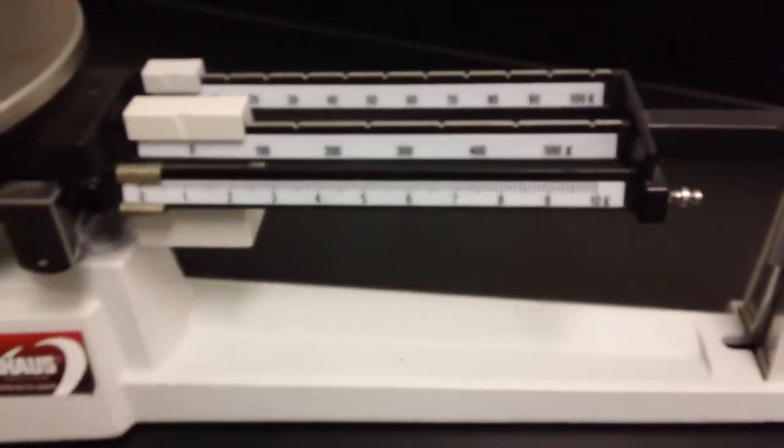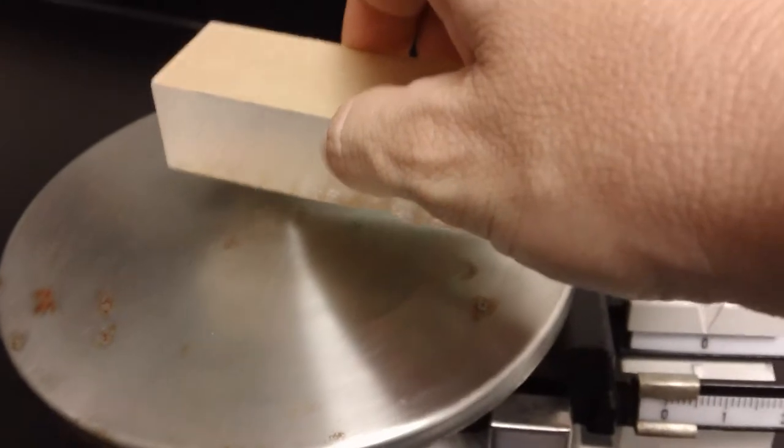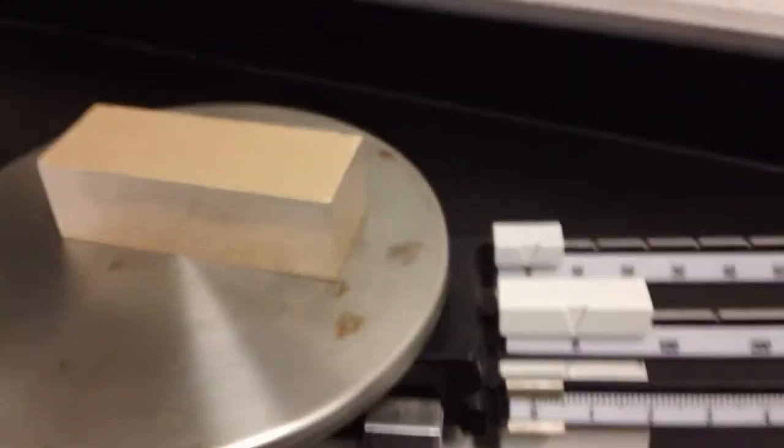So let's go ahead and start doing some measuring here. I'm going to take my block and put it on the plate. Now, you want to make sure that you don't drop it on the plate, because this is kind of a delicate instrument. So as you can see, once we put the block on the plate, we're no longer zeroed out.